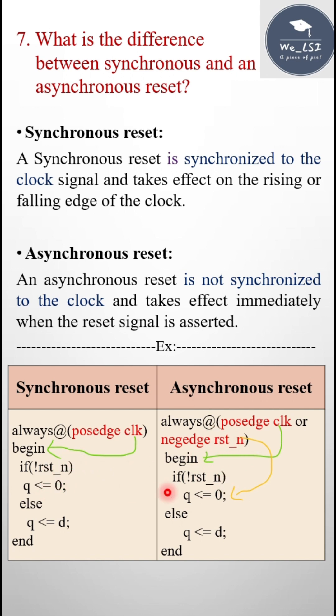But in asynchronous reset, whenever the reset is asserted, it will not wait for the clock—directly output equals zero. But here it will wait for the clock. Here it is not waiting for the clock. Whenever the reset is asserted, output equals zero, whether it is in posedge clock or negative clock.